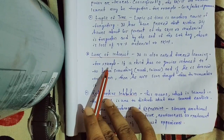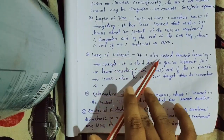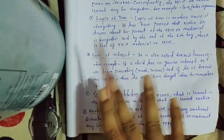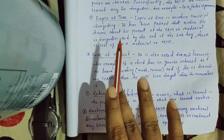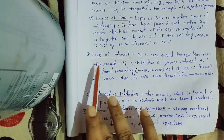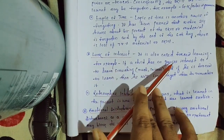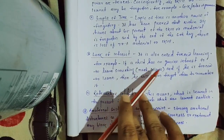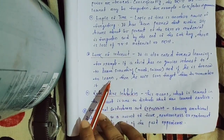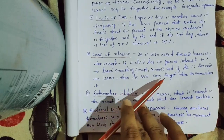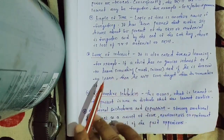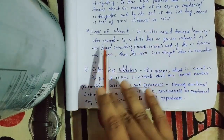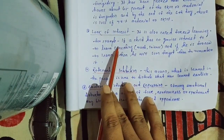The third point is lack of interest. This is also called forced memory, but that never becomes successful learning. For example, if a child has no genuine interest to learn something and is forced to learn, he will soon forget it. This is a natural thing — lack of interest increases the chances of forgetting.